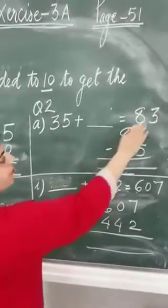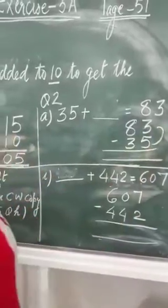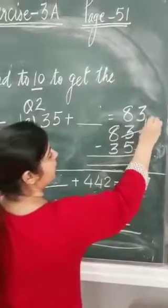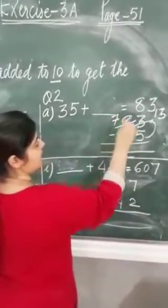So, we will subtract 35 from 83. Can I subtract 5 from 3? No. So, we need to do the regrouping. It will become 13 ones. 8 tens will become 7 tens.